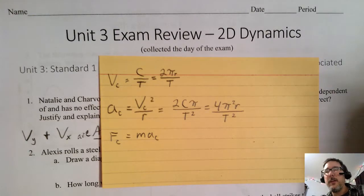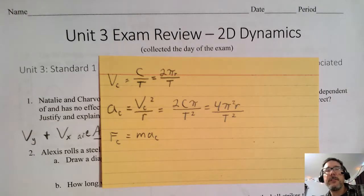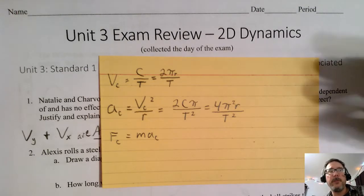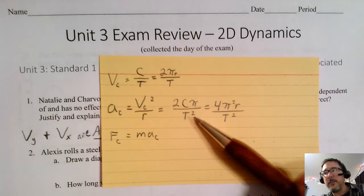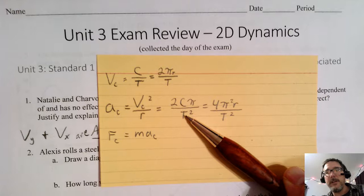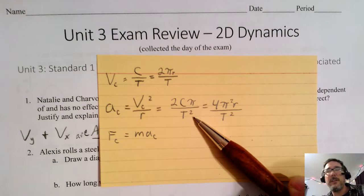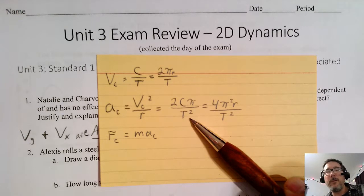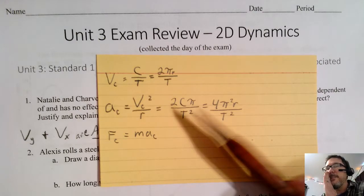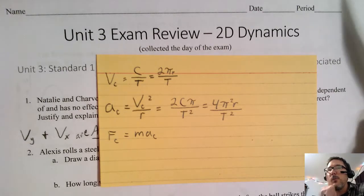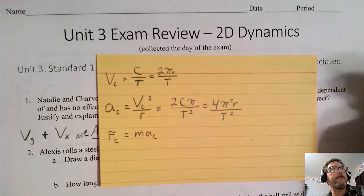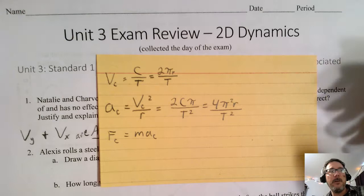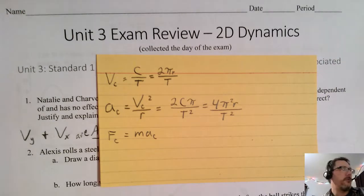There's tons of practice, and the more practice you do the more comfortable you'll be with this stuff. I don't need to remind myself that capital T is period, but you might need to remind yourself what capital T means — in this case it means the time it takes to go around the circle once, in seconds. That's up to you how you want to handle that.